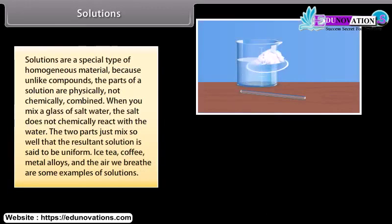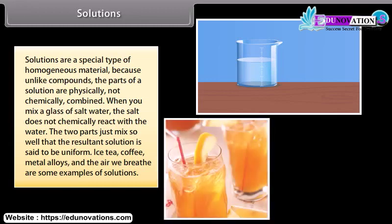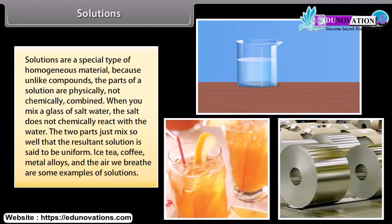Solutions are a special type of homogeneous material because, unlike compounds, the parts of a solution are physically, not chemically combined. When you mix a glass of salt water, the salt does not chemically react with the water; the two parts just mix so well that the resultant solution is said to be uniform. Ice tea, coffee, metal alloys, and the air we breathe are some examples of solutions.